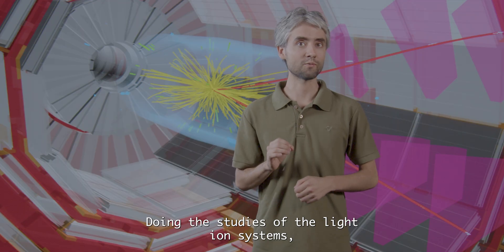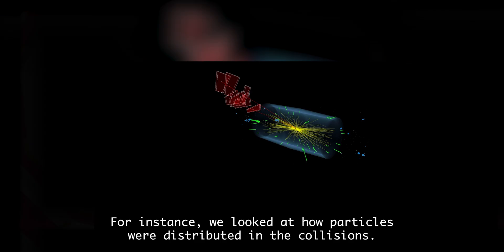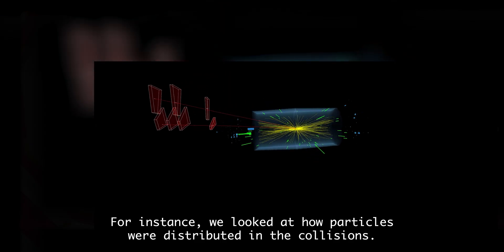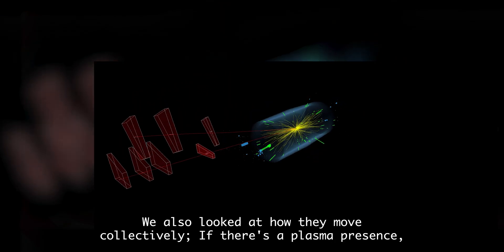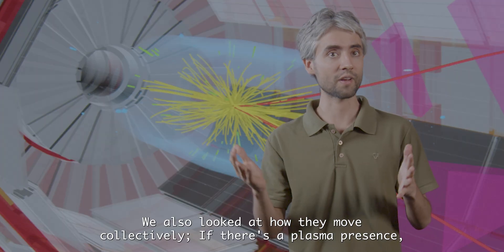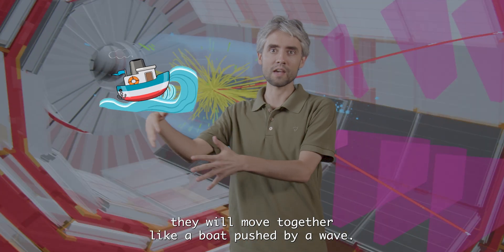During the studies of the light ion systems, we have performed many measurements. For instance, we looked at how particles were distributed in the collisions. We also looked at how they move collectively together. If there's a plasma present, they will move together like a boat pushed by a wave.